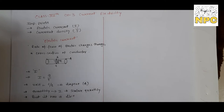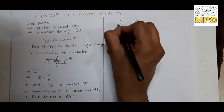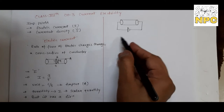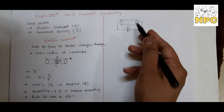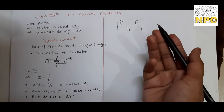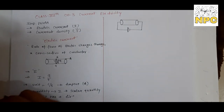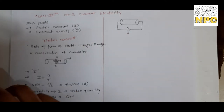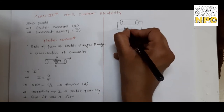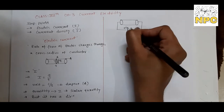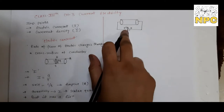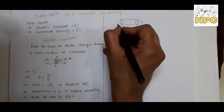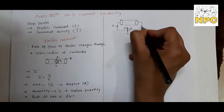The direction of current: if you draw a conductor and connect it to a battery - the battery's job is to give energy to charges so they can move in the conductor. We connected the conductor to a battery with potential difference V. The positive terminal is at higher potential and the negative terminal is at lower potential. The direction of current is always from higher potential to lower potential.